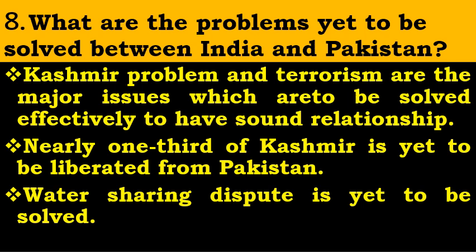What are the problems yet to be solved between India and Pakistan? The main issues are the Kashmir problem and terrorism. One-third of Kashmir, which is occupied by Pakistan, is yet to be liberated. The water-sharing dispute is also yet to be solved.